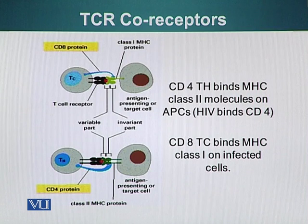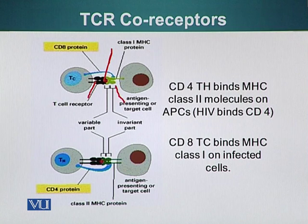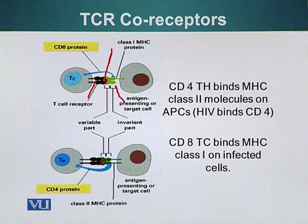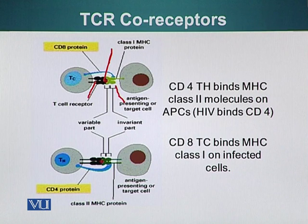As shown on the slide, we have a helper T cell or cytotoxic T cell with the TCR shown in black. The TCR is interacting with the foreign antigen shown as a small red dot, and the green molecule is the MHC molecule which is presenting that antigen. Antigens are presented to T cells by antigen presenting cells. These antigen presenting cells phagocytose foreign entities and pathogens, degrade them, and display small pieces of these pathogens on their surface in association with MHC molecules.